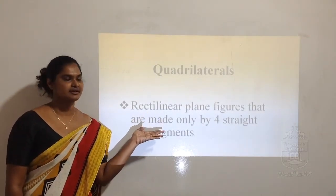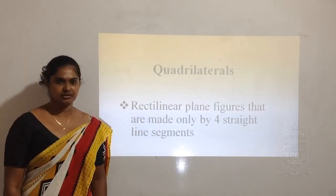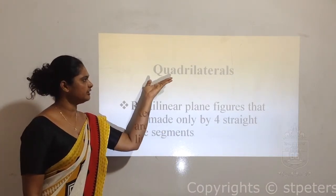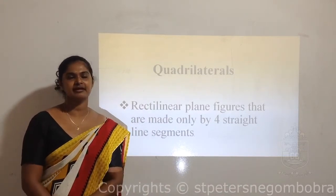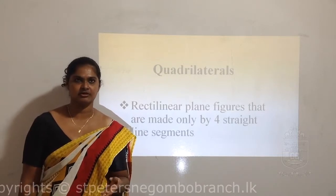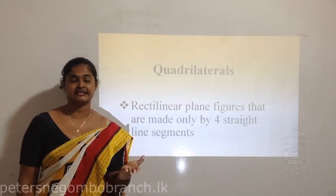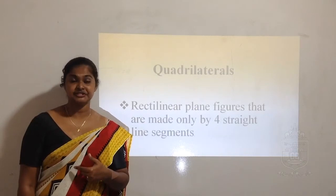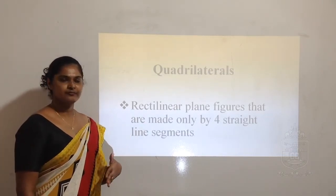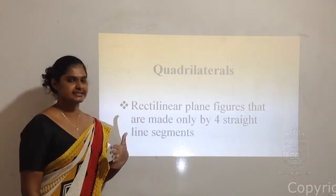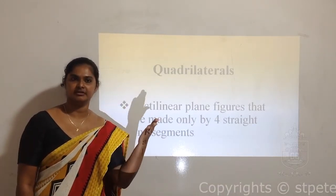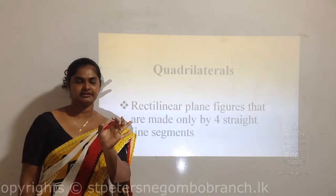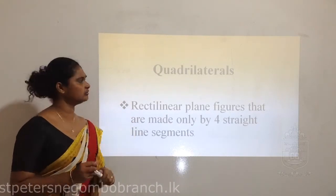Let's learn about quadrilaterals - this is a new word for you. Science and Maths evolved in many countries like Italy, Greece, Egypt and so on. There are certain words that came into Maths and Science from those languages. There are some prefixes - a prefix is a short word that has been joined in front of another word.